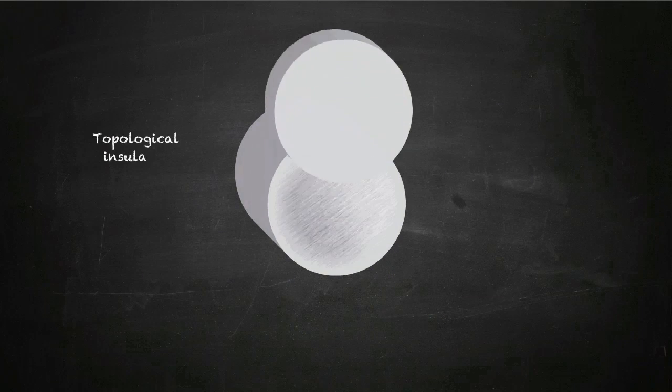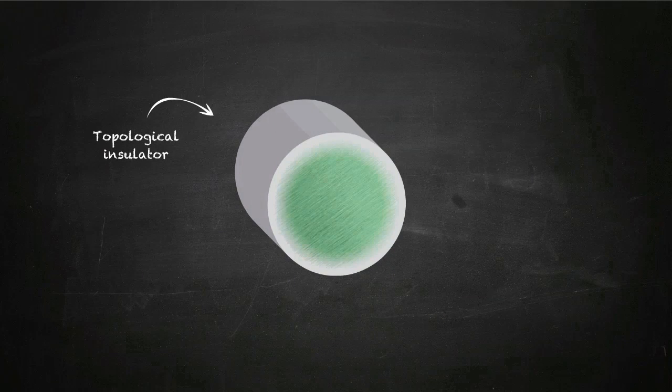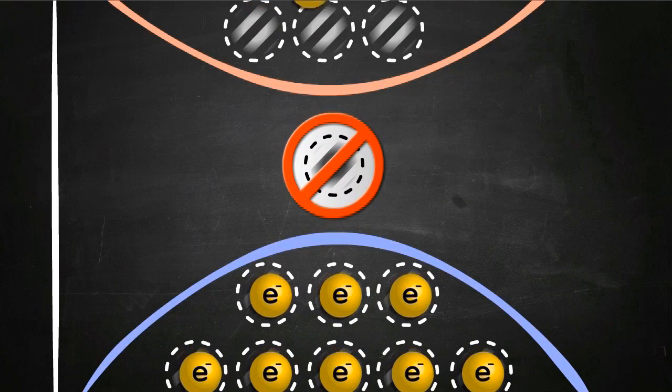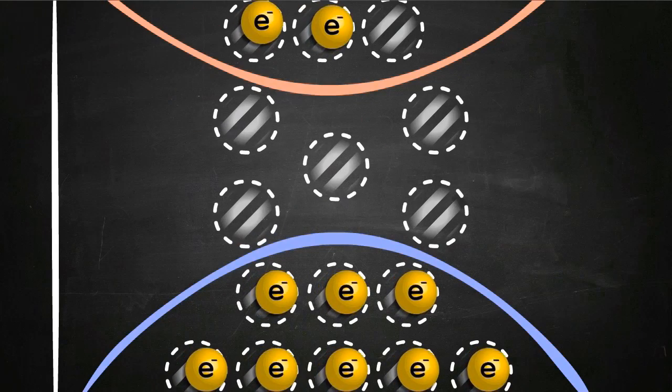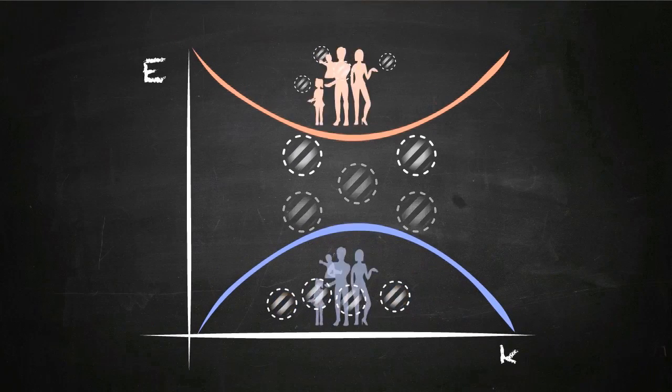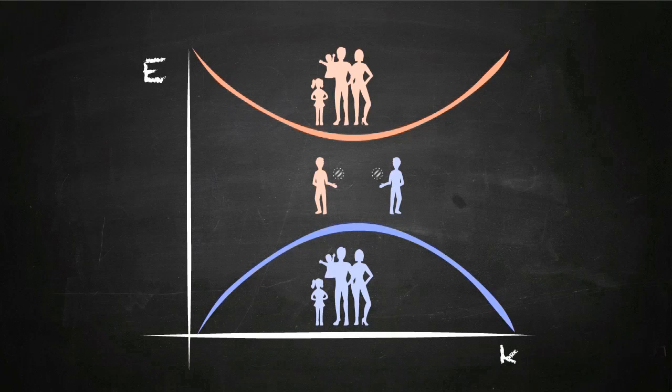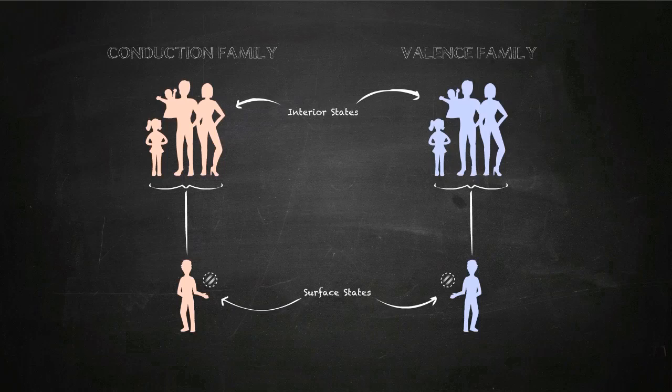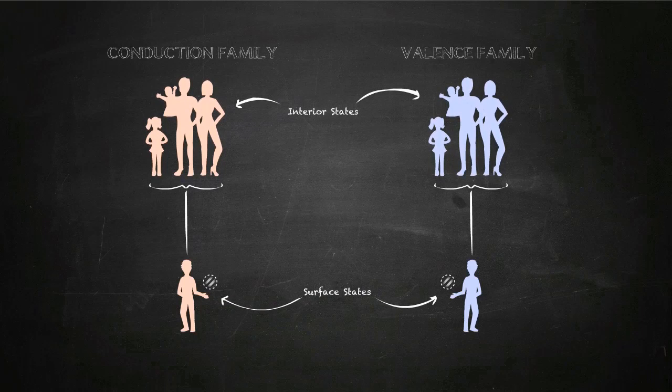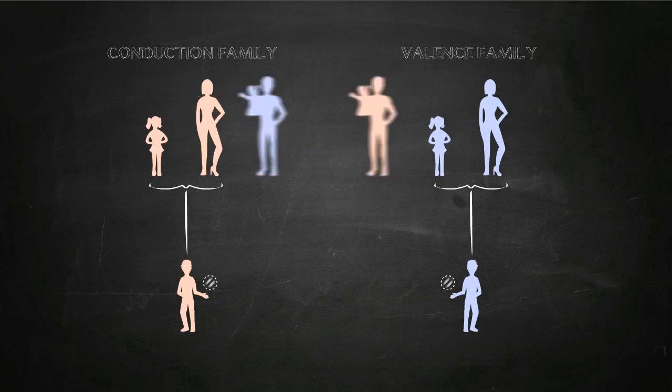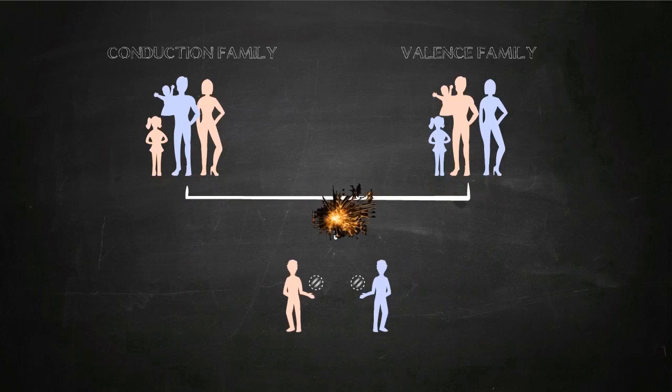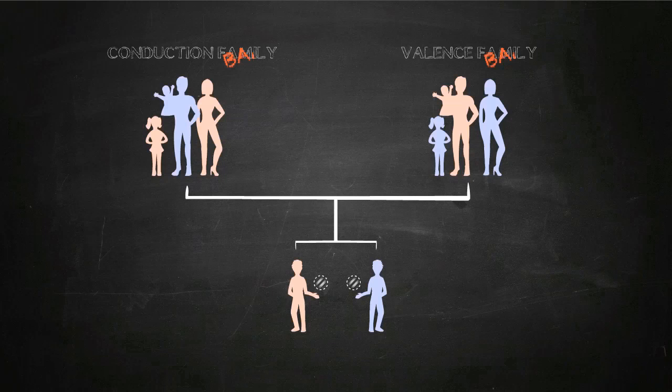This interaction makes some states of the conduction band exchange position with some of the valence band. So what? Well, inside the material nothing happens, but on the surface it is another story. We have said that states do not exist in the gap, but on the surface of insulators this rule is often broken. These states are offspring or descendants of interior states. That is to say, they belong to the family of valence or conduction. And here is the problem with topological insulators. Because some members of the family have been exchanged, the surface states inextricably join those families, that is the valence and conduction bands.